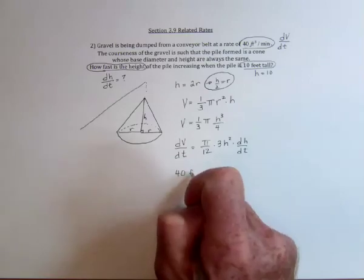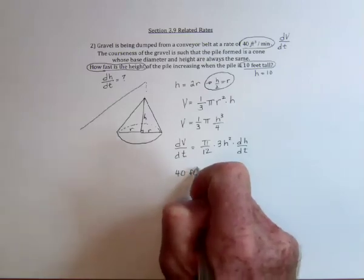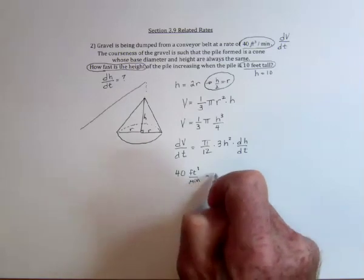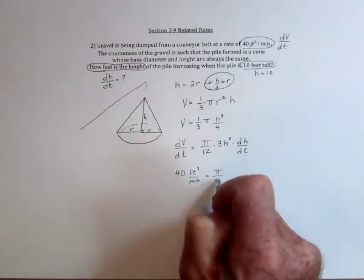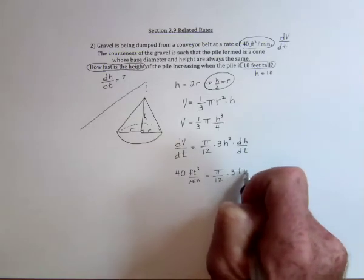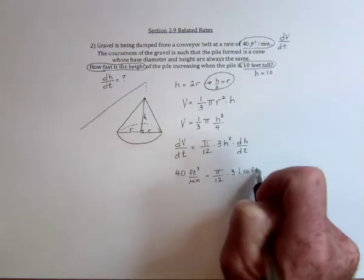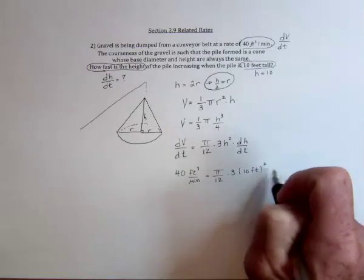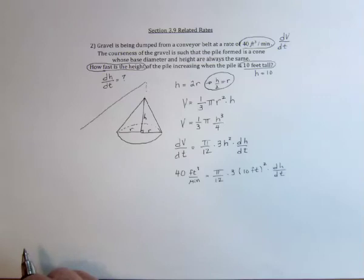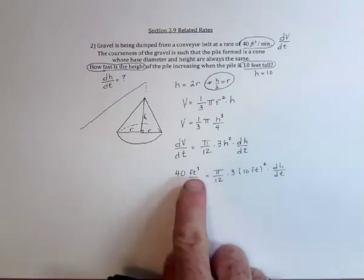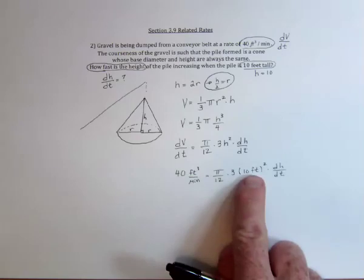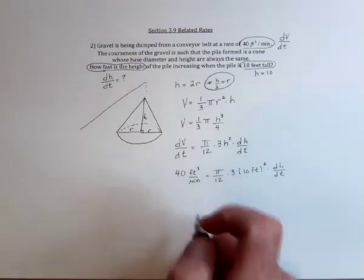Another thing you can do to make sure that you're doing things right is keep track of the units and then see if the answer is in the units that make sense. So when I look at the units, I've got feet³ is going to get divided by feet², so it's just going to be feet.